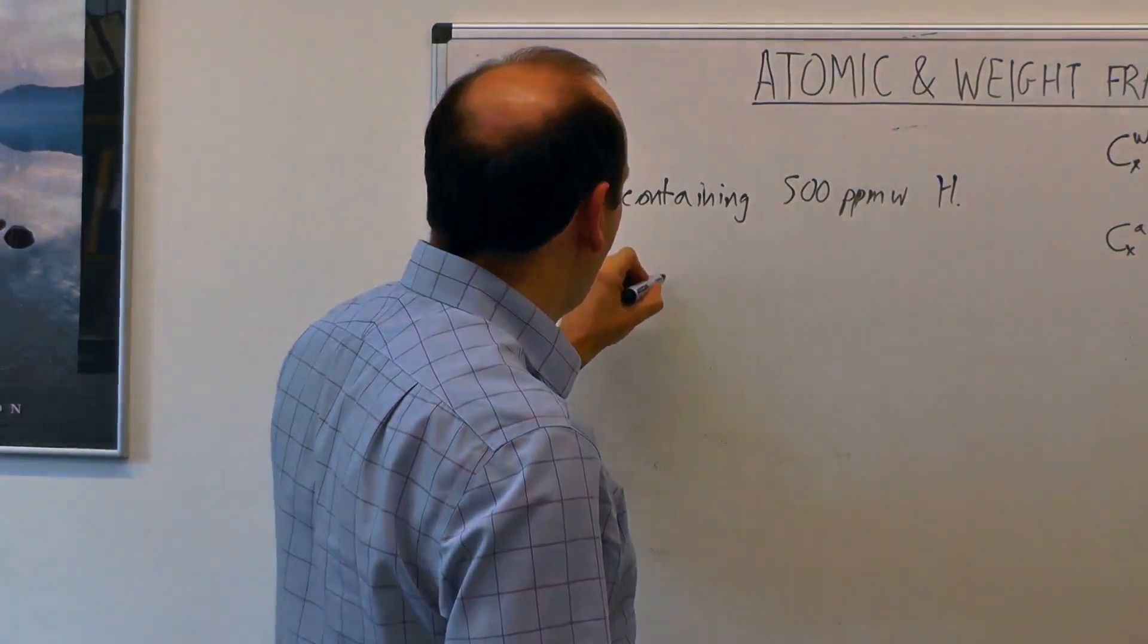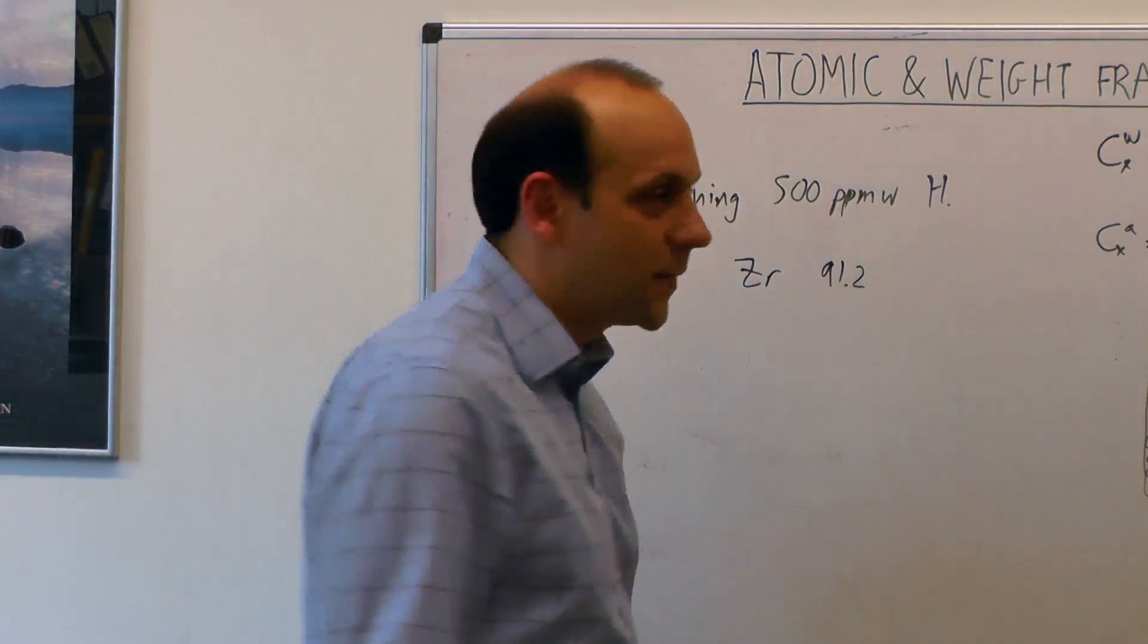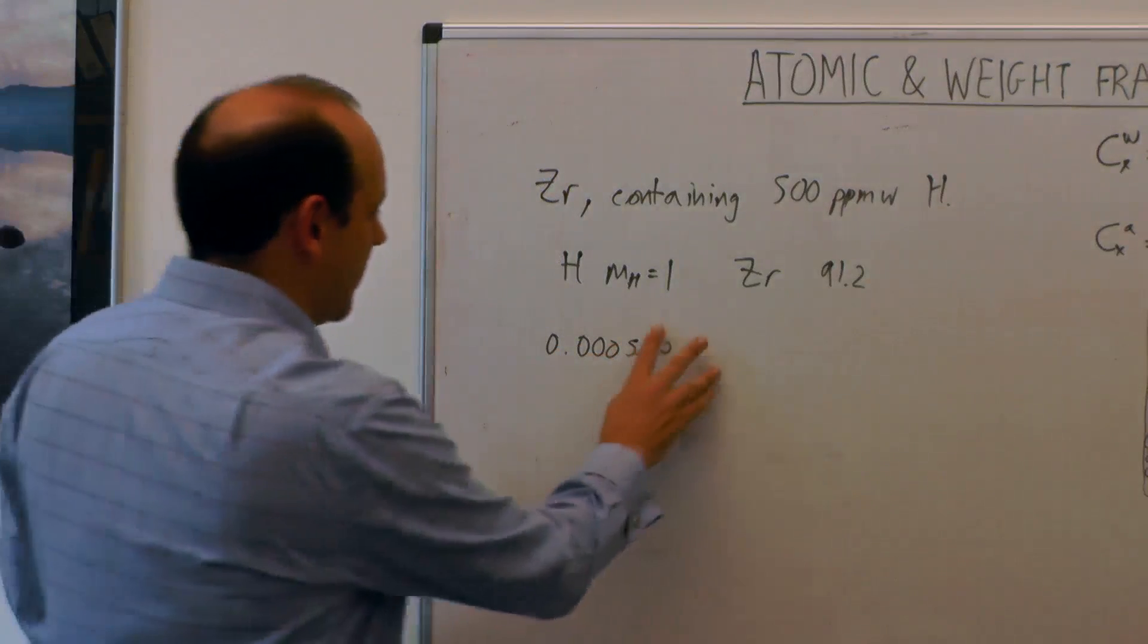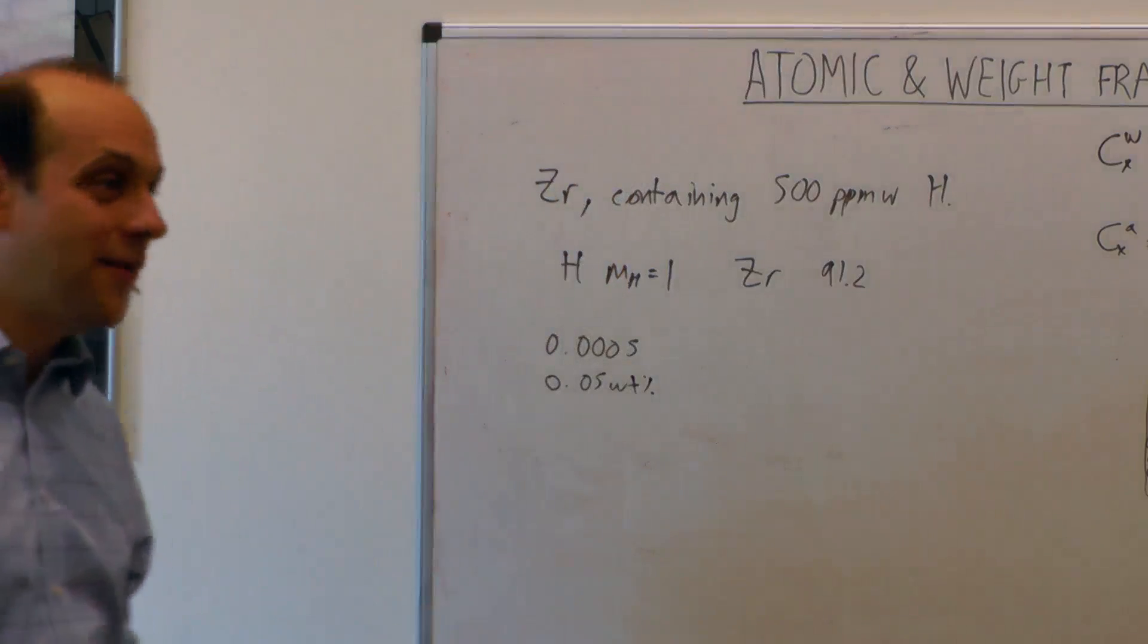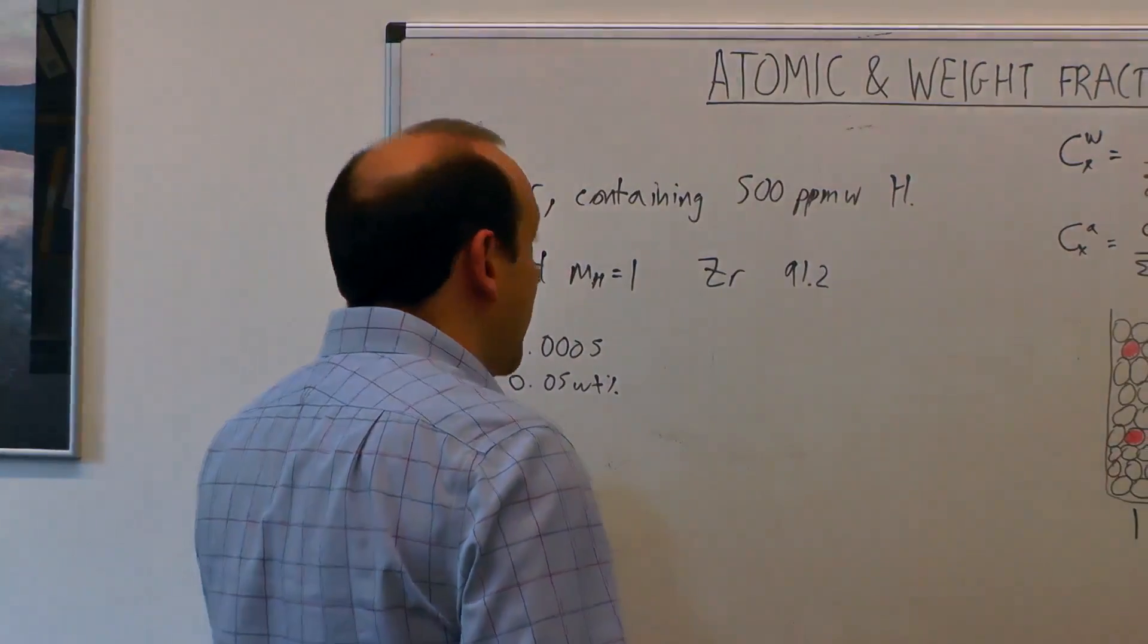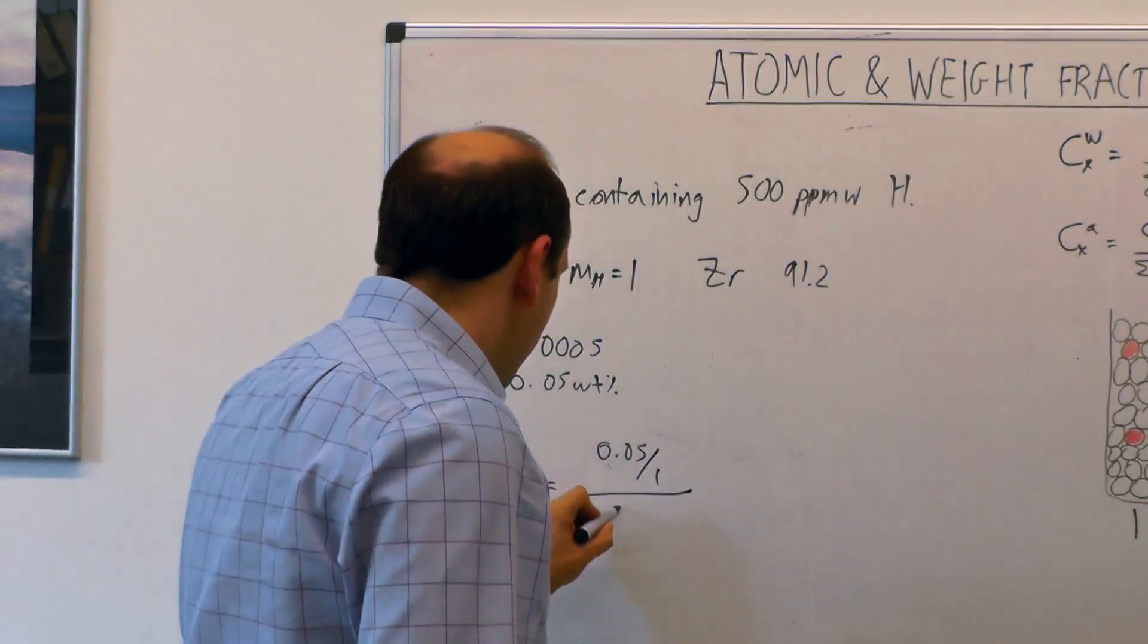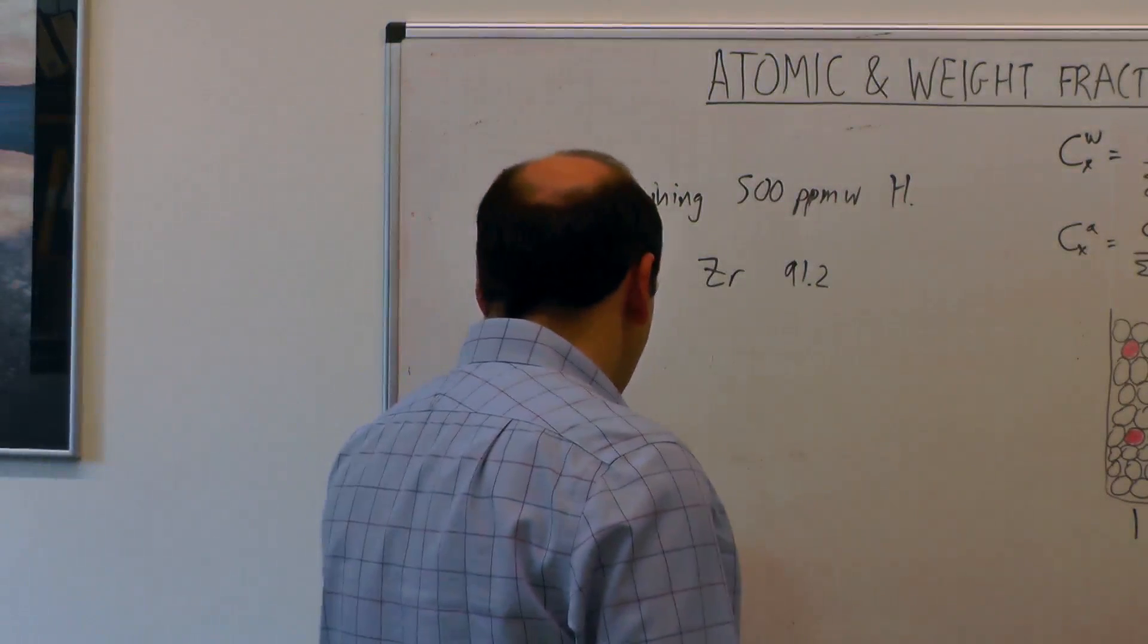So they would say something like zirconium containing 500 ppm by weight of hydrogen. If we want to know what that is in atom fraction, then we need to know the atomic mass of each. Hydrogen has a molar mass of 1, and zirconium has a molar mass of 91.2. If we want to convert that to atomic, we've got a fraction of 0.000500, so 500 parts per million, which is 0.05 weight percent. If we want to convert that to atomic percent, the number in atomic is then the number by weight, 0.05 weight percent divided by a molar mass of 1 divided by 0.05 divided by 1 plus 99.95, that's the weight percentage of zirconium, divided by 91.2.